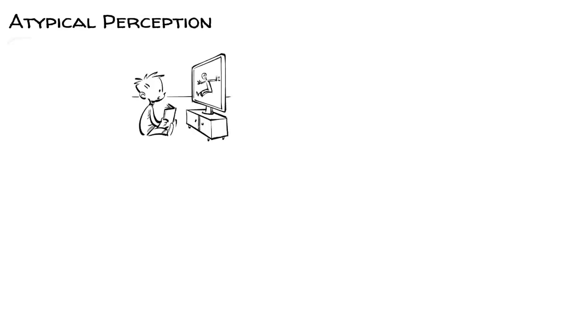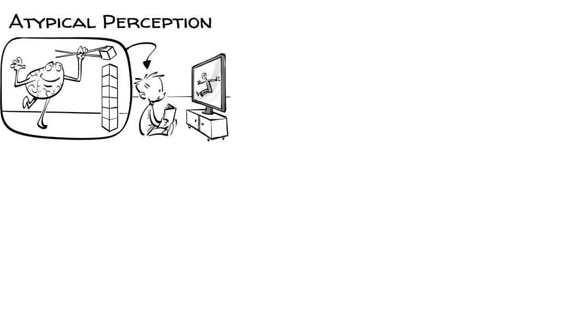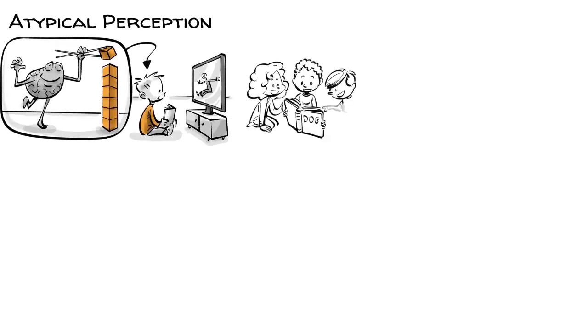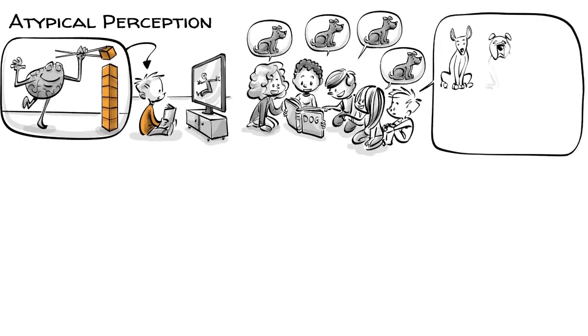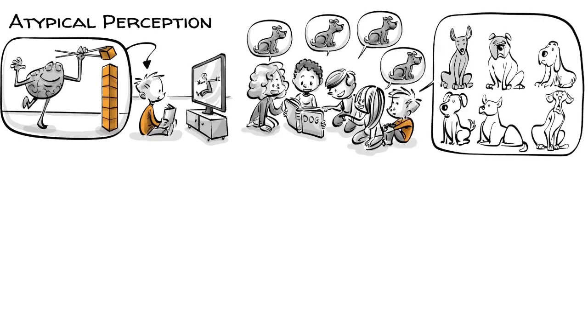Timo has an atypical perception. When reading books or watching movies, Timo's brain picks up and organizes the information differently. While his neurotypical peers categorize things and form schemas, for example, they identify everything with four legs that barks as a dog, for Timo each type of dog is unique and categorized in Timo's mind individually.